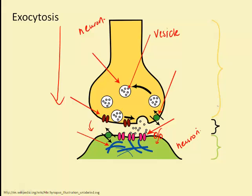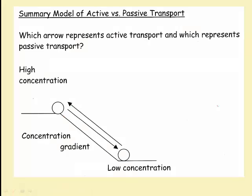We'll look at this more when we study the nervous system. In this summary model of active transport and passive transport, the downward arrow shows passive transport because it requires no energy. Moving a ball uphill, however, requires a lot of energy and goes against the natural flow — not unlike active transport, where materials are transported against a concentration gradient and therefore require energy in the form of ATP.